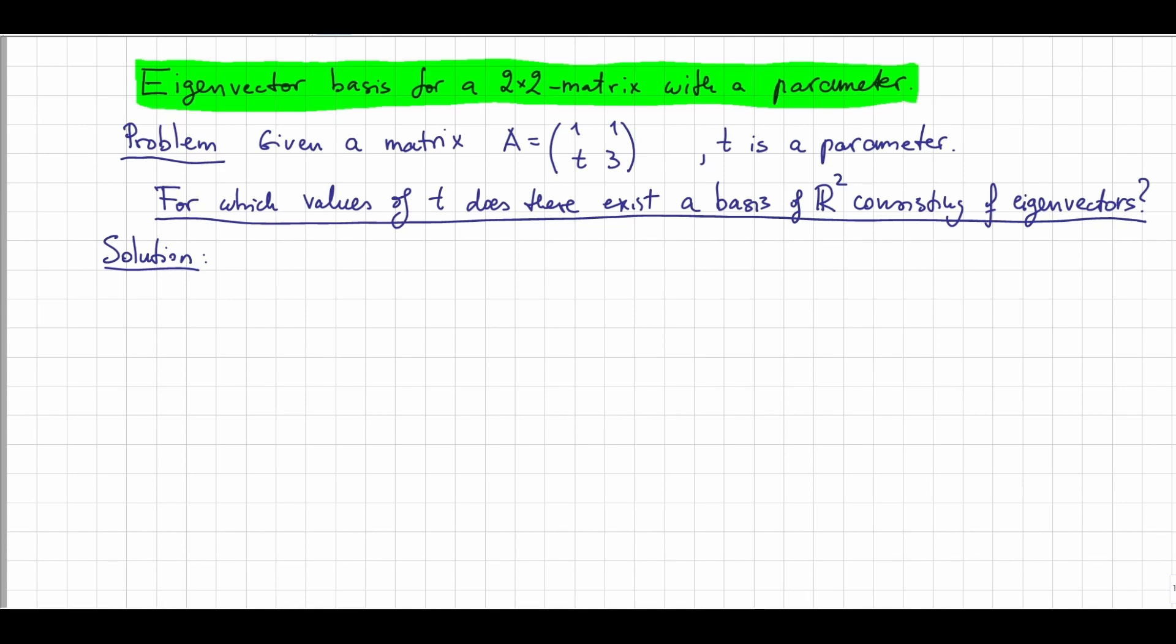Let us proceed to the solution. As a first step, let us recall that eigenvalues are solutions of the following equation: determinant of (1-λ, 1; t, 3-λ) equals 0. So we need to solve this for λ.